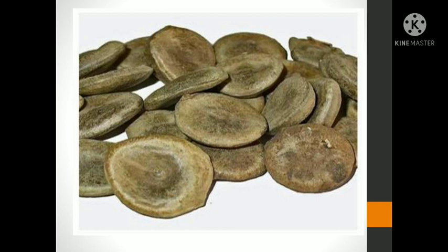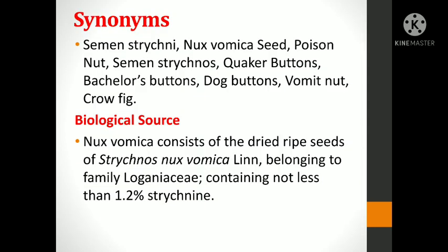These are the seeds of Nux vomica, commonly called Kuchila. Synonyms of Nux vomica: Semen Strychnii, Nux vomica seeds, Poison Nut, or commonly Kuchila. Biological source: Nux vomica seeds consist of dried ripe seeds of the plant Strychnos nux-vomica, belonging to the family Loganiaceae.